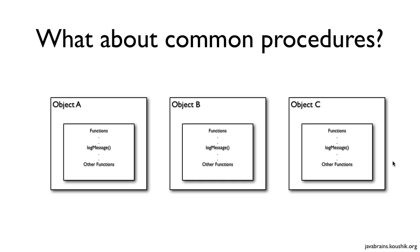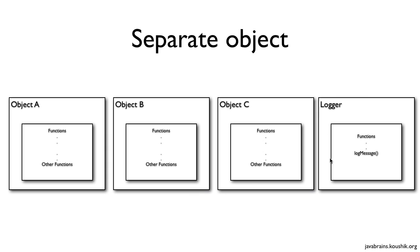This is not really a good design because you're repeating yourself by including the same method in different objects. One way to refine this is to take that method out and create a separate object for it. You would have a log message method inside a new object called the logger object. Then object A, B, and C would not have that log message method anymore. Instead, whenever a log message needs to be called, it would reference the logger object. It could be a dependency, a static method call, or a parent class you inherit the log message functionality from.